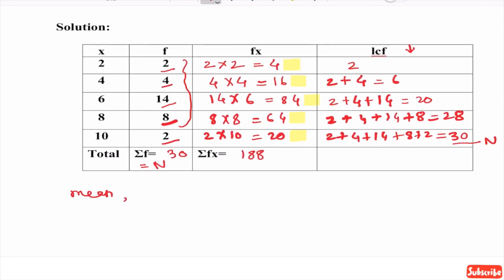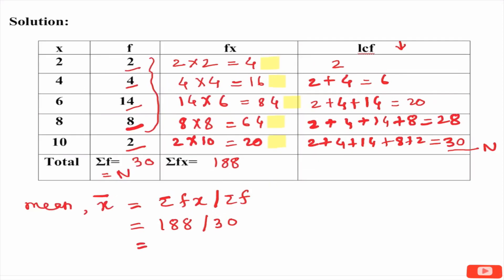Let us find out mean first. Mean which will be denoting by x bar equals summation fx upon summation f. That equals 188 upon 30. Let us calculate the answers correct up to 6 decimals. The answer comes to be 6.2 and 6 recurring. We want to write it up to 6 decimal.